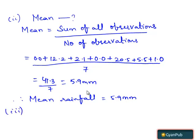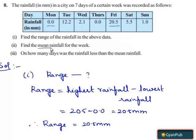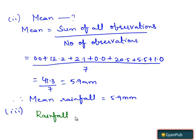Now let's move on to the third part. In the third part, on how many days was the rainfall less than the mean rainfall. When we see the above tabular form, we can find that the mean rainfall is 5.9. 0.0 is less than 5.9, 2.1 is less than 5.9, 0.0 is less than 5.9, 1.0 is less than 5.9, and 5.5 is less than 5.9. Therefore, rainfall was less than the mean rainfall on 5 days.